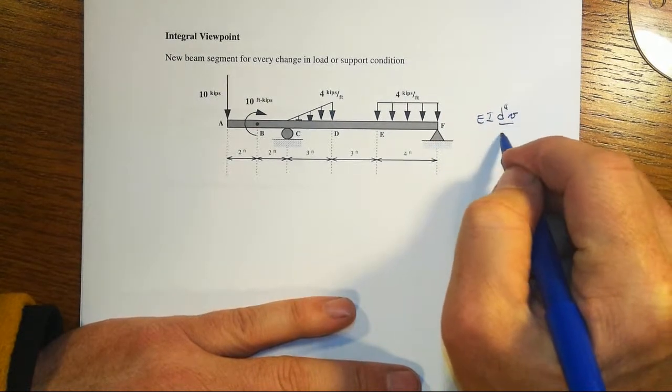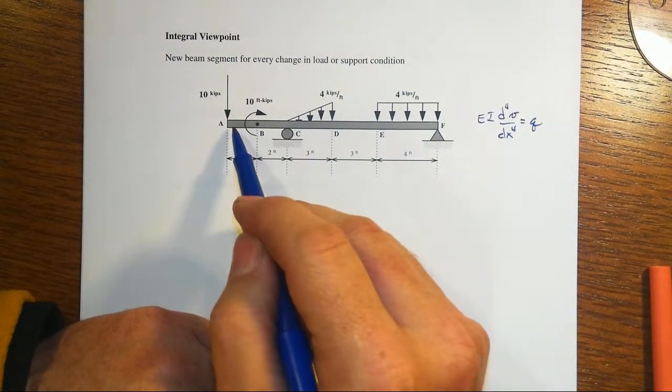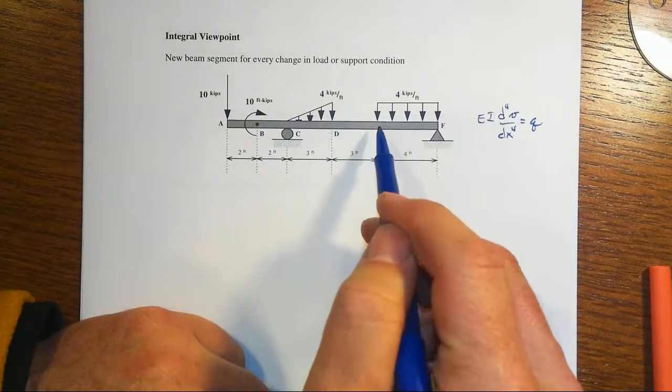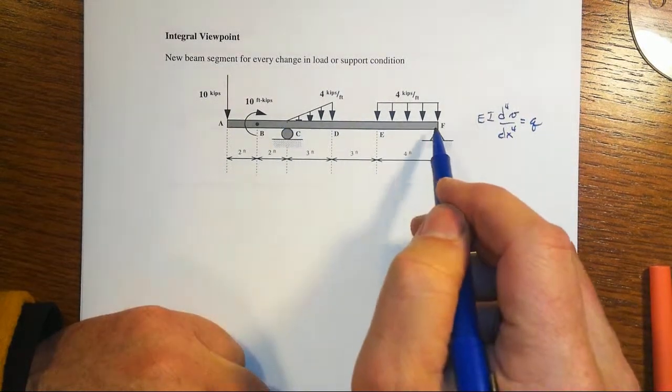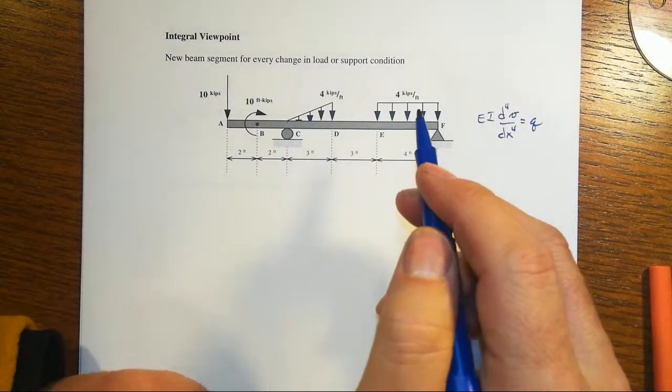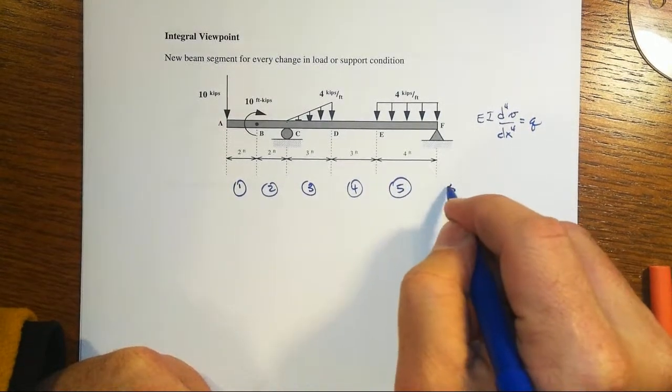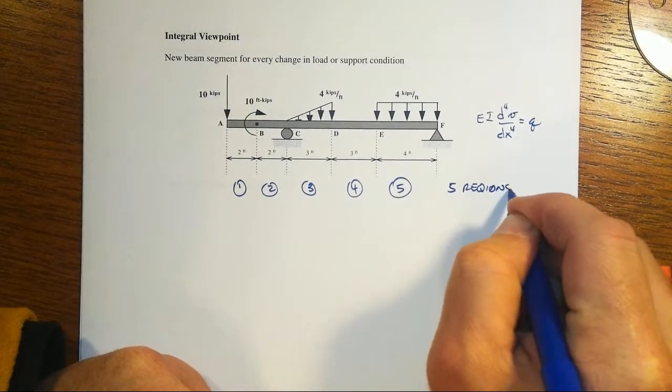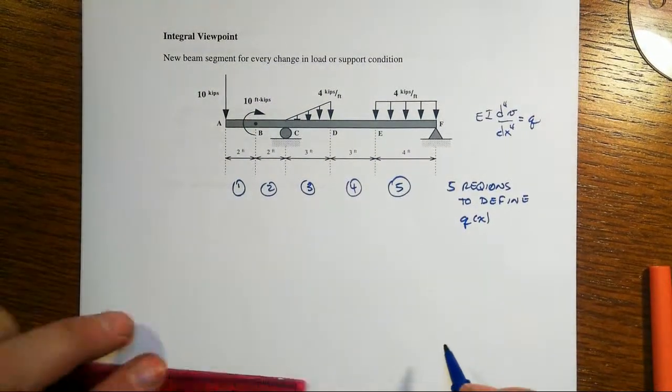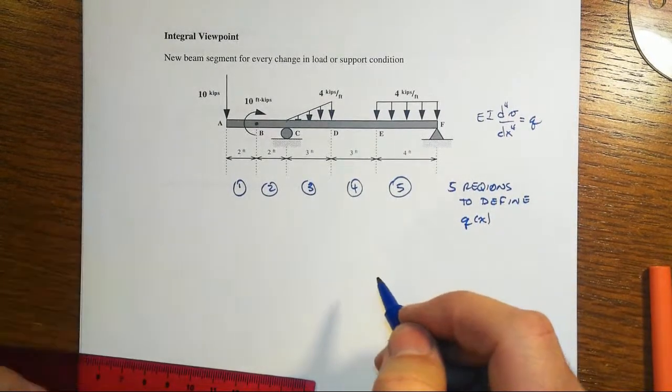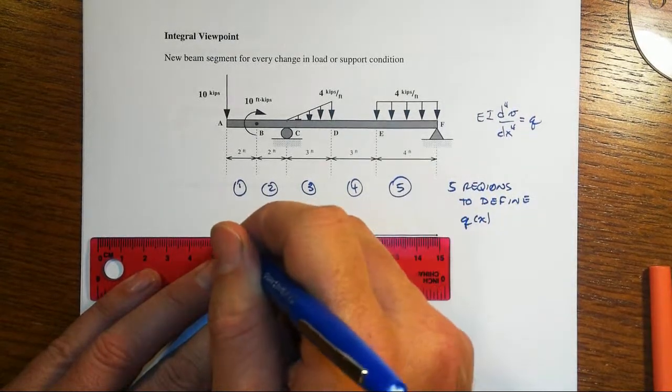And that is, all right, we've got EI is constant. So we've got the fourth derivative of the deflected shape times EI is going to be equal to the load. Now, notice we've got one, two, three, four, five different segments just for defining the load. The support conditions happen to be at those specific beginning and end or transition locations. So we end up with one, two, three, four, five regions to define Q of X. And that means that we're going to have to integrate this segmentally five different times. Whoa, that just is awful, just really awful, right?